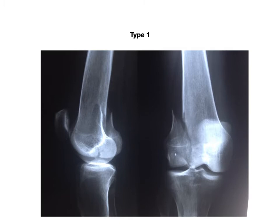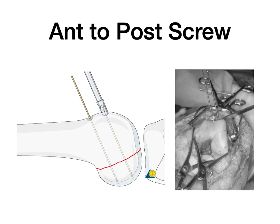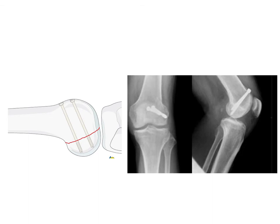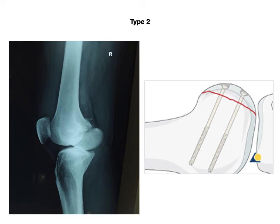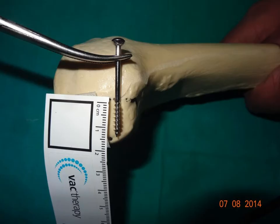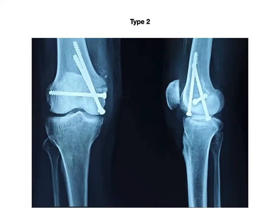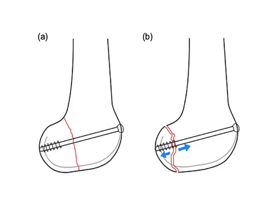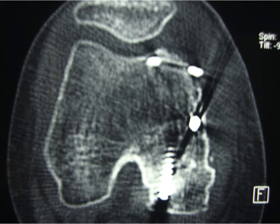Type 1 involves a large fragment and is most amenable to a simple anterior-to-posterior screw placed perpendicular to the fracture line. Type 2, where the fracture line is less than 2.5 cm from the posterior surface, requires posterior-to-anterior fixation. A standard screw has approximately 16 mm of thread — if the threads engage the fracture line they will not achieve compression and will in fact distract it. CT scan clearly demonstrates that when screw threads are at the fracture site, they cause it to open.